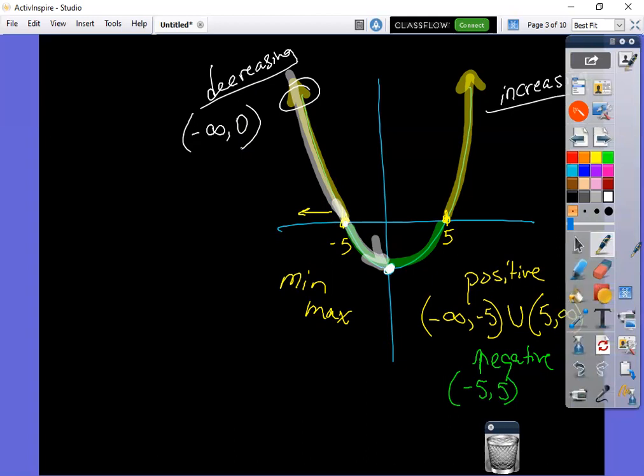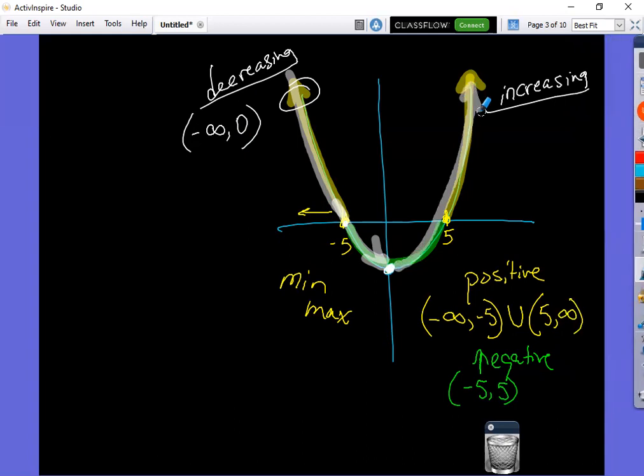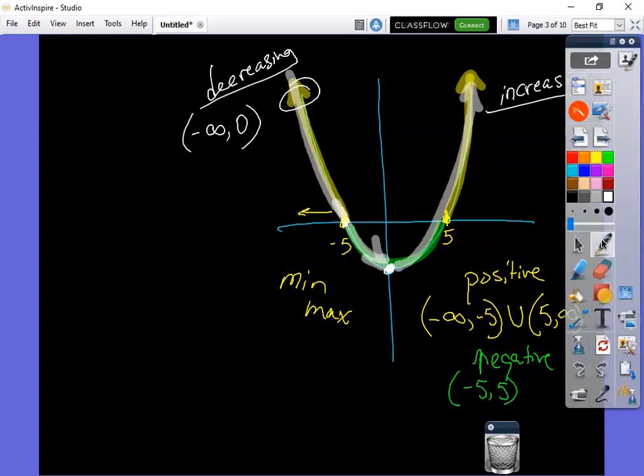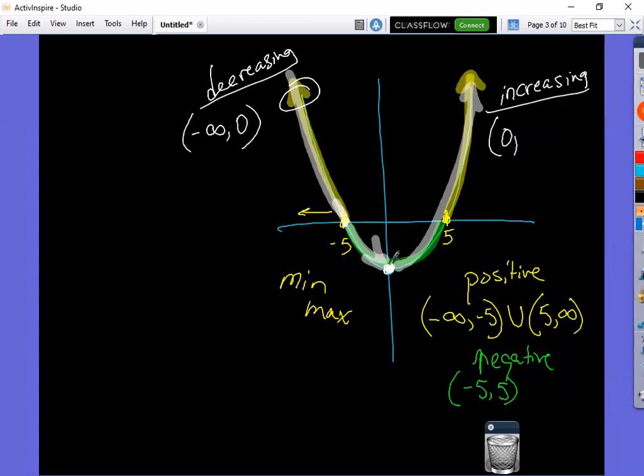And on the right side, if you looked over there, starting from that zero and moving to the right, you would always be going up. So the increasing on that side would start at the zero right down here at the origin again. And it would go forever to the right.